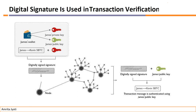The digitally signed signature will be decrypted using James's public key, and the final original transaction can be seen. The transaction message is authenticated using James's public key. This is the concept of the digital signature which is used in transaction verification in the blockchain network.